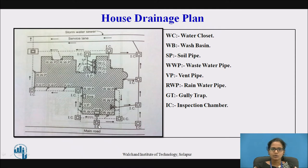This is the main road. Over here we have the service lane, and the inspection chambers — you can see that they are provided at all the corners of the buildings at certain intervals. This is the SP line; it is provided where you have the WCs, that is the soil pipe, which collects the waste coming from the washrooms containing human excreta.